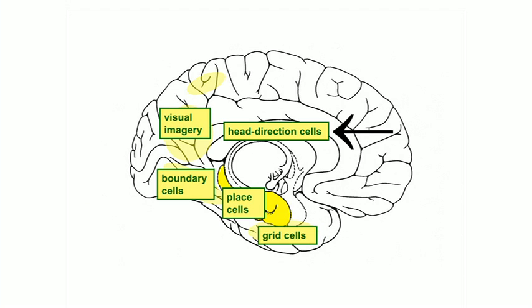Another kind of cell, head-direction cells, which I didn't mention yet, they fire like a compass according to which way you're facing. They could define the viewing direction from which you want to generate an image for your visual imagery so you can imagine what happened when you were at this wedding, for example.